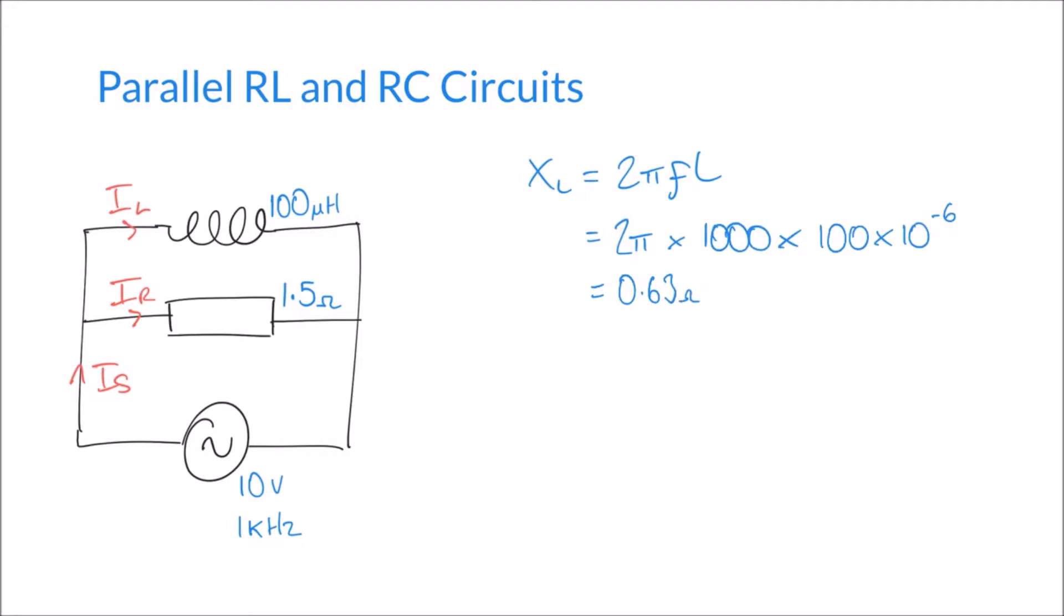So going back to our currents here, we now know that we have a supply voltage of 10 volts supplying both of these components in parallel, and we can now just use Ohm's law because we know that current is voltage divided by resistance. So in this case IR would simply be voltage divided by resistance, which is 10 volts divided by 1.5 ohms, and that gives me a current of 6.67 amps.